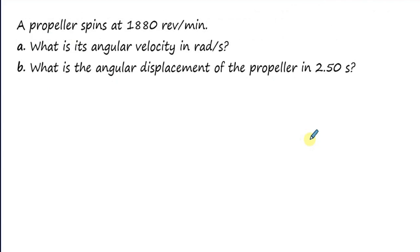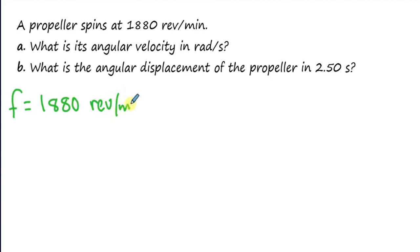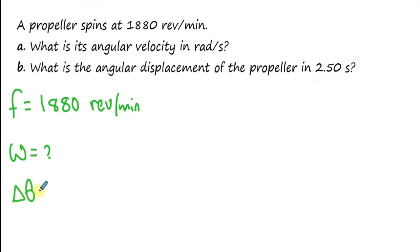The second problem: a propeller spins at 1880 revolutions per minute — this is the frequency, so f equals 1880 revolutions per minute. We need to convert it into revolutions per second. We are looking for omega in rad per second, and also for the angular displacement delta theta of the propeller in 2.5 seconds, where delta t equals 2.5 seconds.